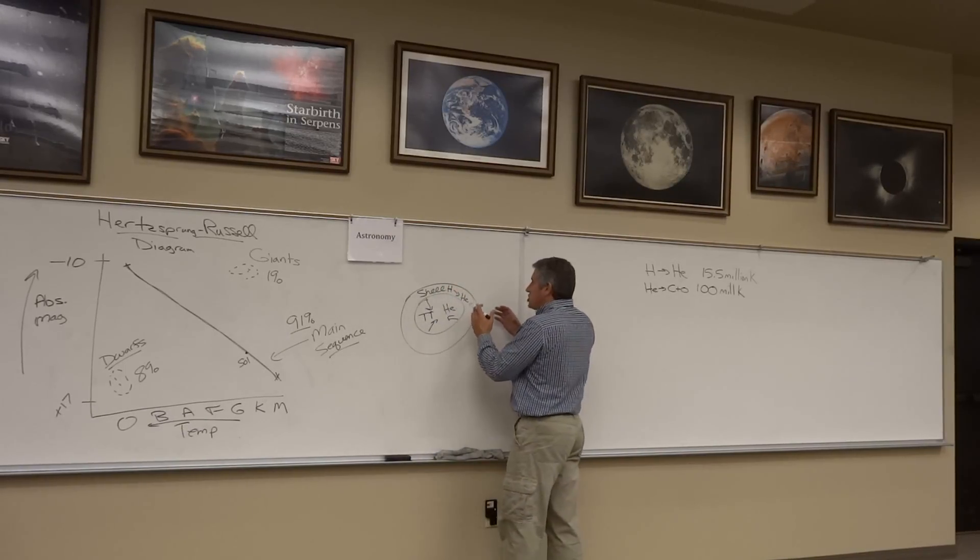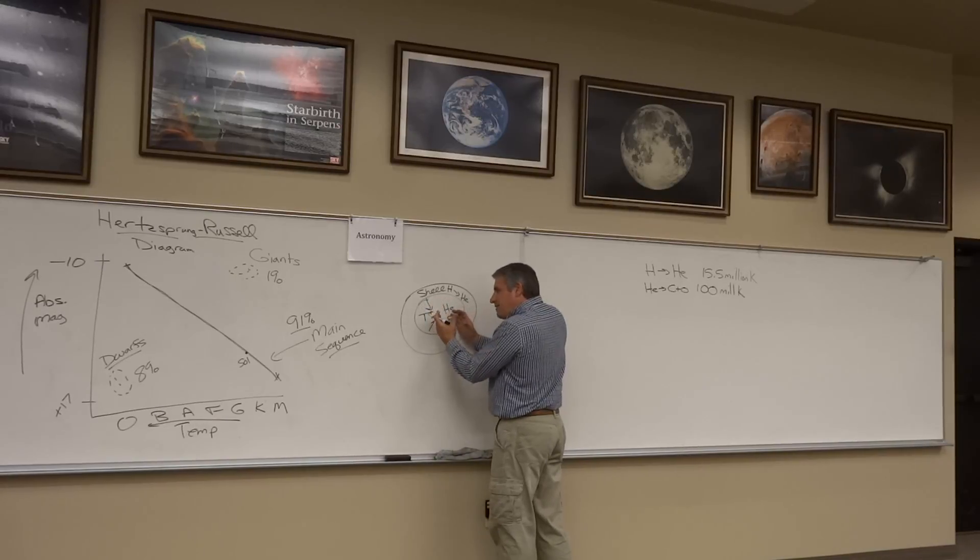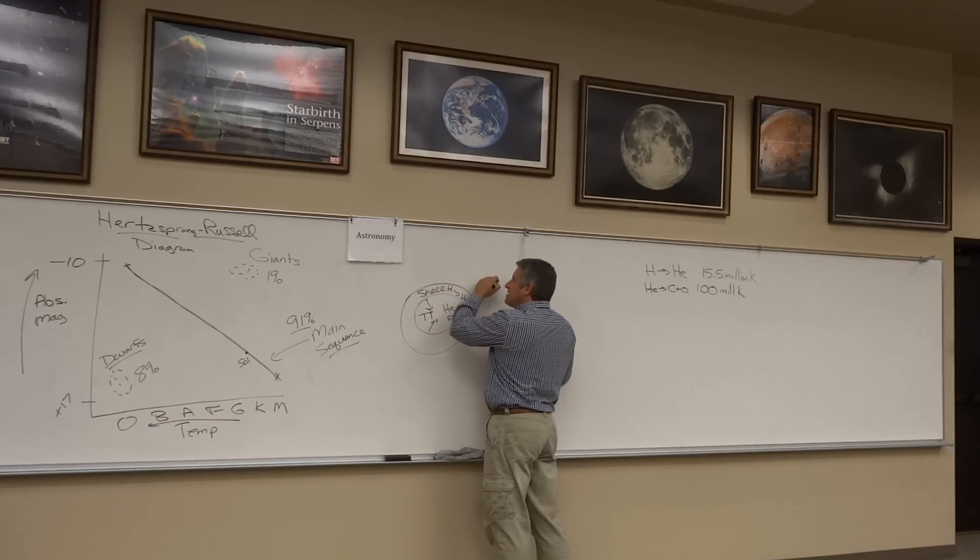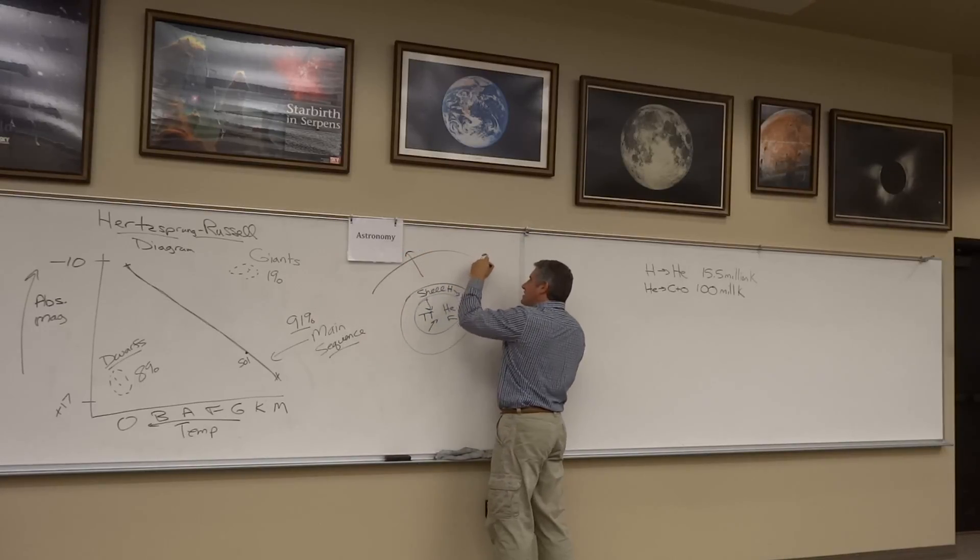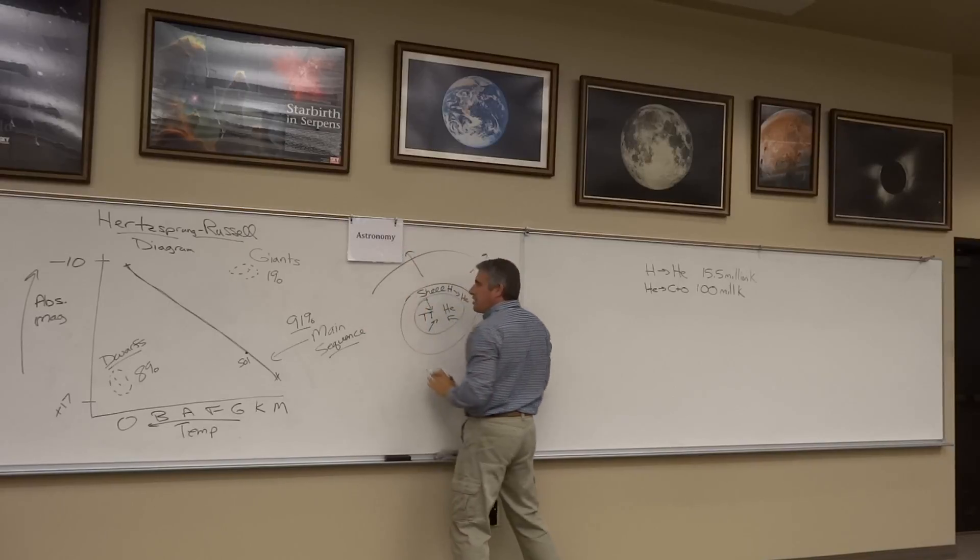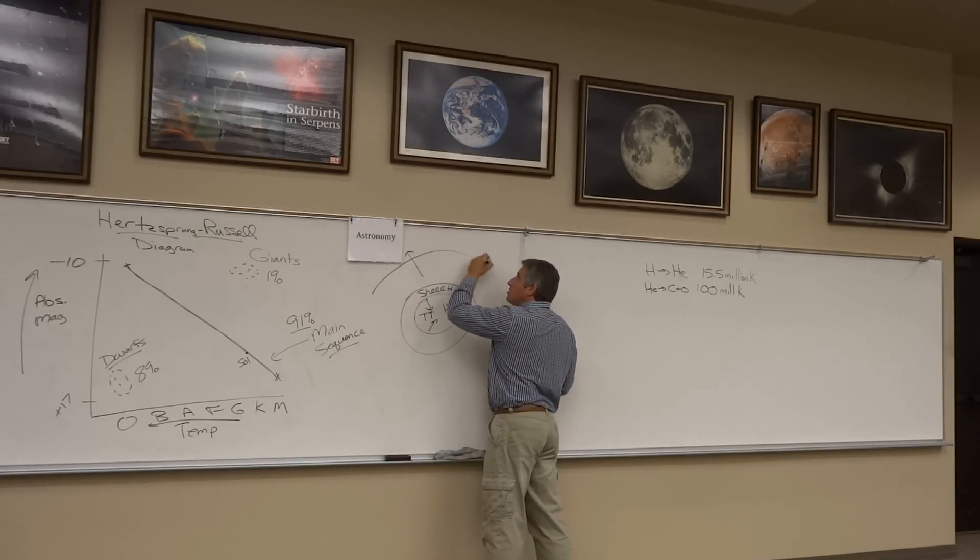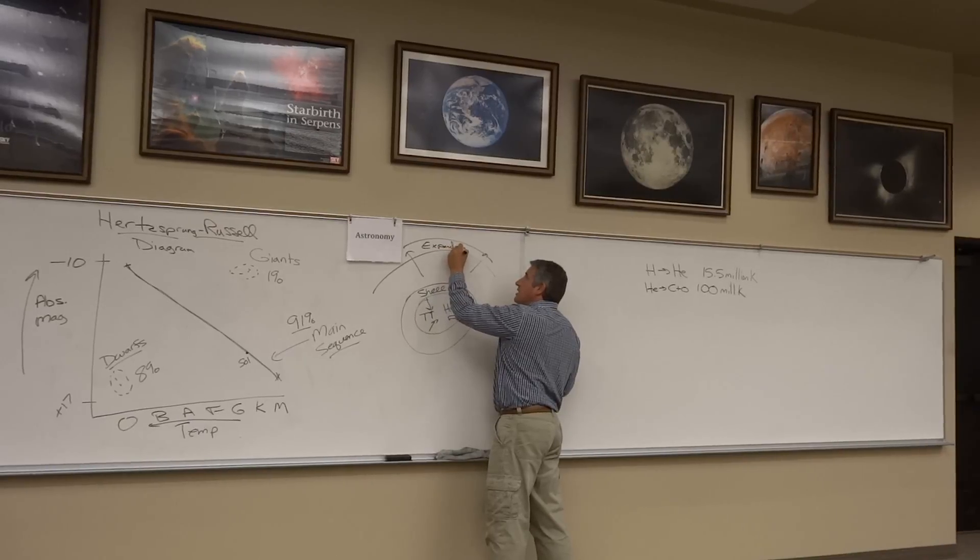The presence of that shell, at the same time the core is collapsing, causes the outer layers of the star to expand a little bit. You've got this small shell here that is pushing on the thin outer layer and causing the star to expand. When things expand, as we know, they cool.